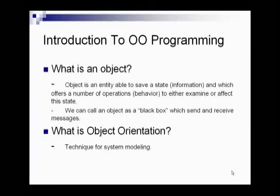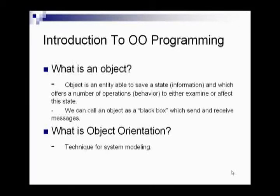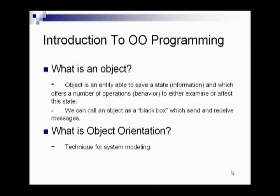The first and most important technical term that we describe here is object. An object is an entity able to save a state and which offers a number of operations to either examine or affect the state. An object-oriented model consists of a number of objects, which are clearly delimited parts of the modeled system. Objects usually correspond to real-life entities such as cars, mobile phones, trees, etc. Each object contains individual information and its behavior.